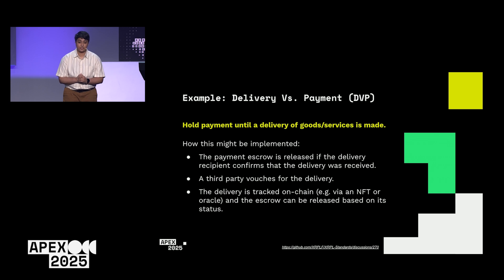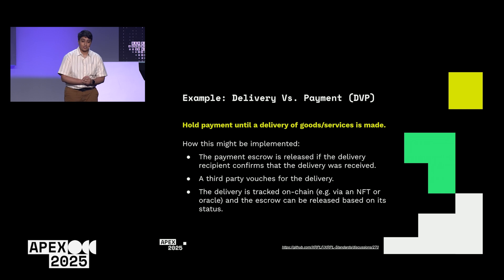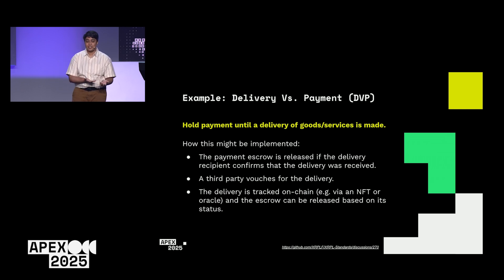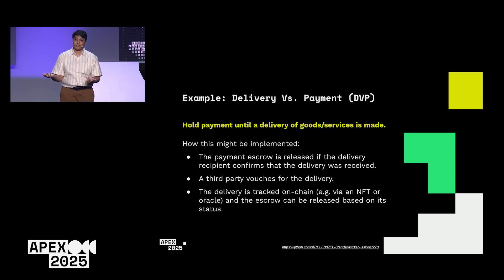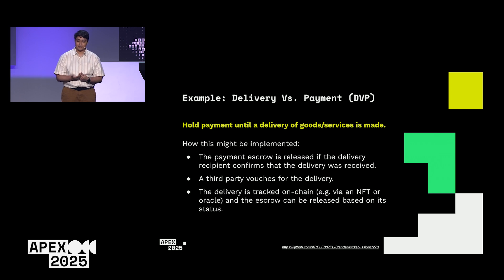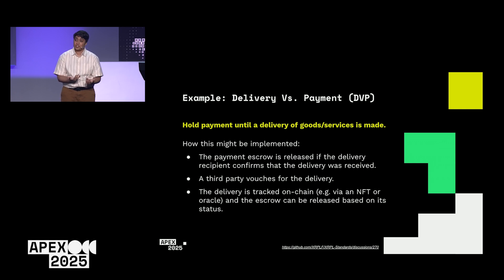A second example: delivery versus payment. You're holding payments until a delivery of goods or services is made. The delivery recipient could confirm the delivery was received. You could have a third party — maybe the delivery company — vouch for that delivery. Or the delivery could be tracked on-chain; if the good being transferred is an NFT, you just check whether the NFT has been transferred. Or you could use an Oracle system — a trusted Oracle that tracks whether the delivery was successfully made — and the escrow is released once that's confirmed on-chain.